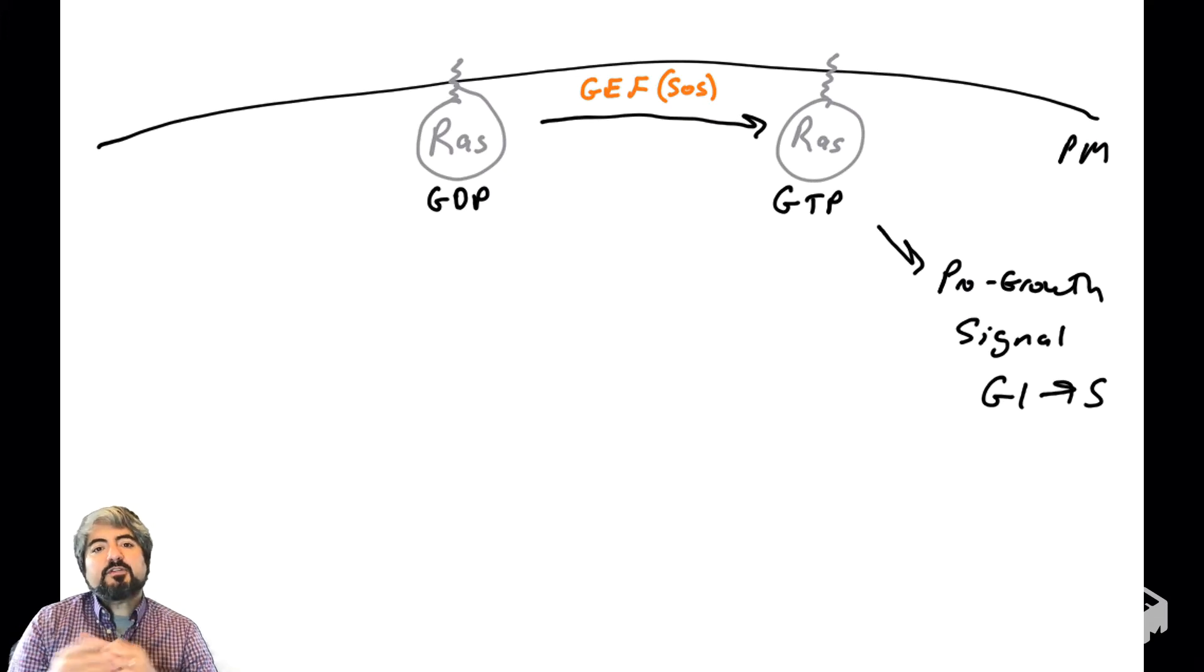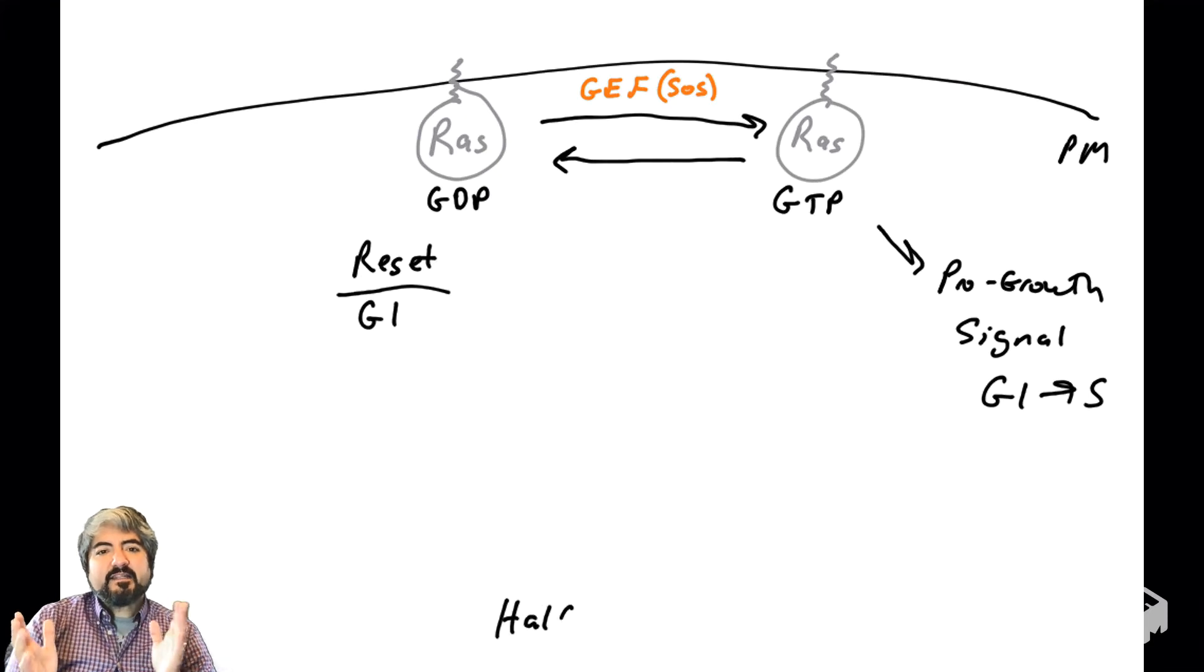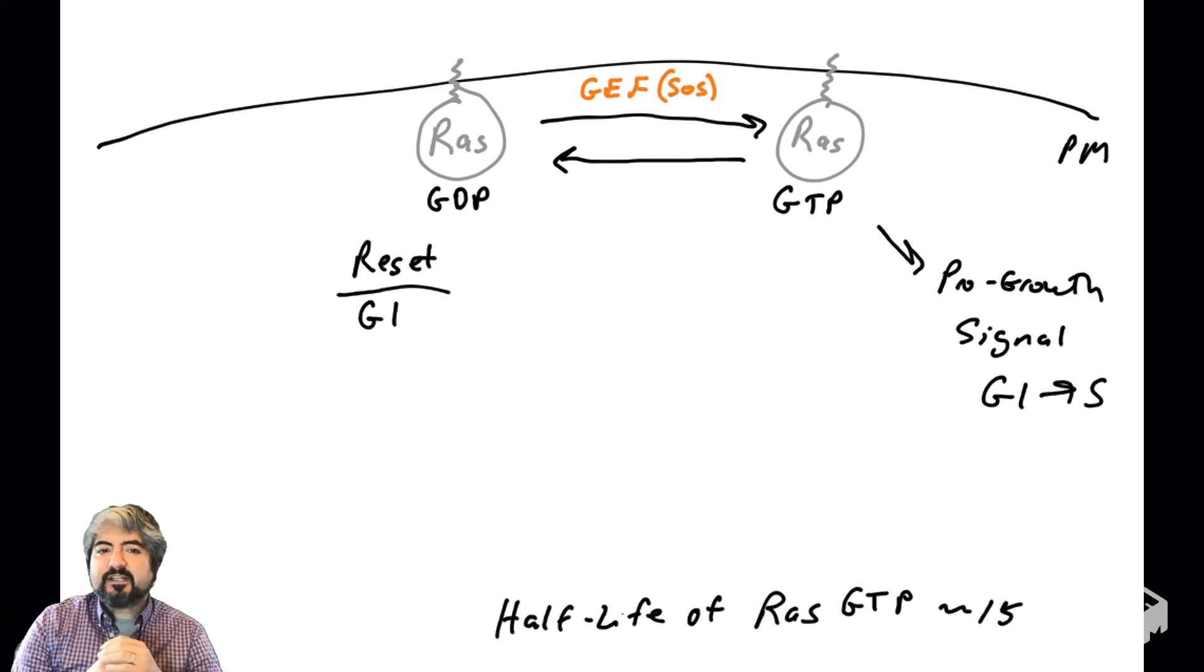This is accomplished by guanine nucleotide exchange proteins such as SOS, which will exchange GDP to GTP. However, RAS needs to be reset back to its GDP-bound form. You can't leave RAS with GTP on it all the time, or else cells will think it's always time to go through the cell cycle.